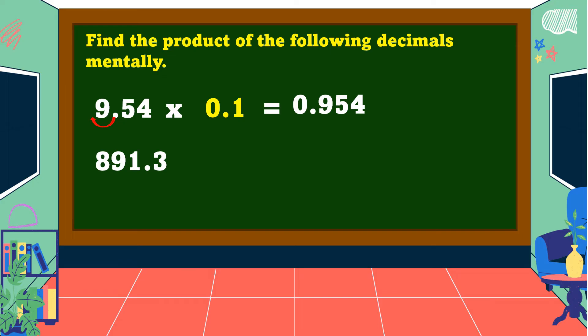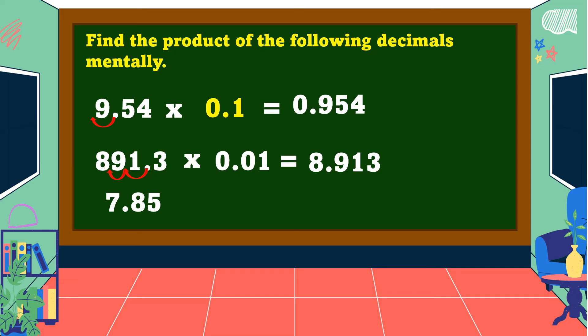Another example: eight-hundred-ninety-one and three-tenths times one-hundredth. In multiplying a decimal by one-hundredth, move the decimal point two places going to the left. So the answer is equal to eight and nine-hundred-thirteen-thousandths.